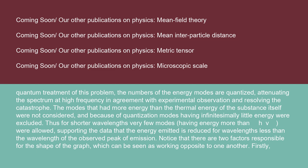The modes that had more energy than the thermal energy of the substance itself were not considered, and because of quantization, modes having infinitesimally little energy were excluded. Thus, for shorter wavelengths, very few modes having energy more than h·nu were allowed, supporting the data that the energy emitted is reduced for wavelengths less than the wavelength of the observed peak of emission.